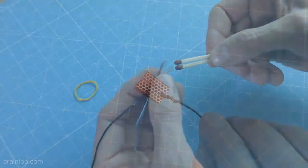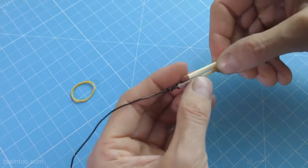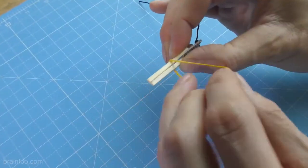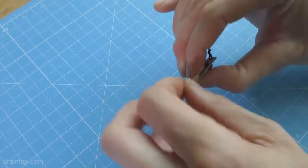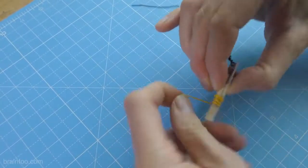Now if we slip the striker between the two faces of the match like this it's all starting to come together. All we need to do now is wrap an elastic band around the bottom half of the matches nice and tightly.